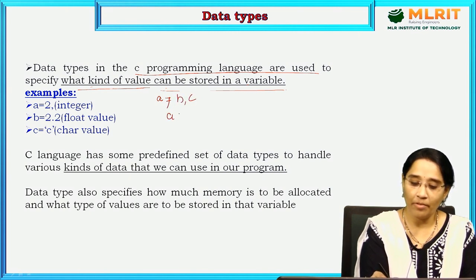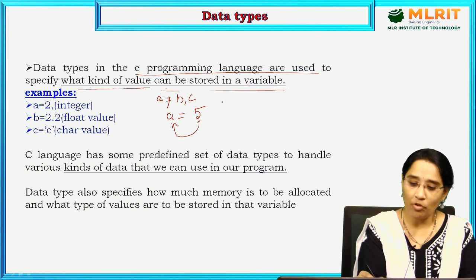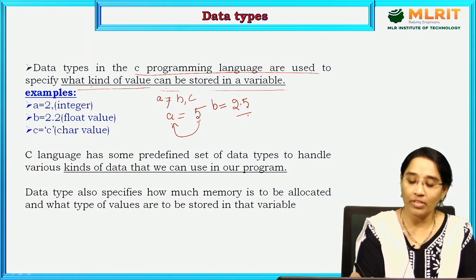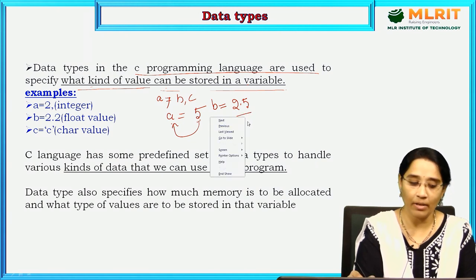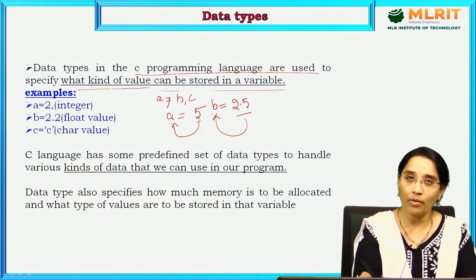Suppose if I have one data — my data is 5. I want to store this 5 data to a variable, so certainly I will assign this data to a variable. Suppose if I want to store B equals 2.5 — 2.5 is obviously a float number or a decimal number. This value will be stored in variable B.